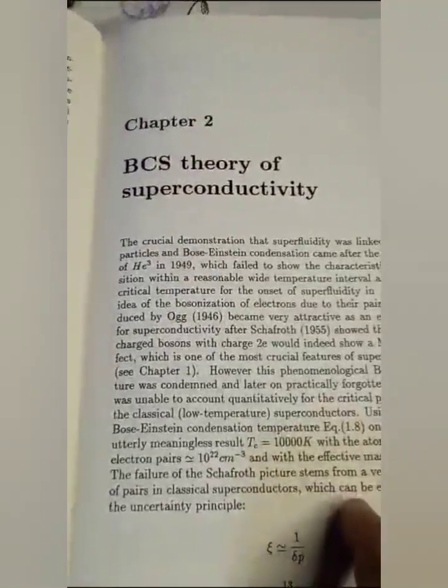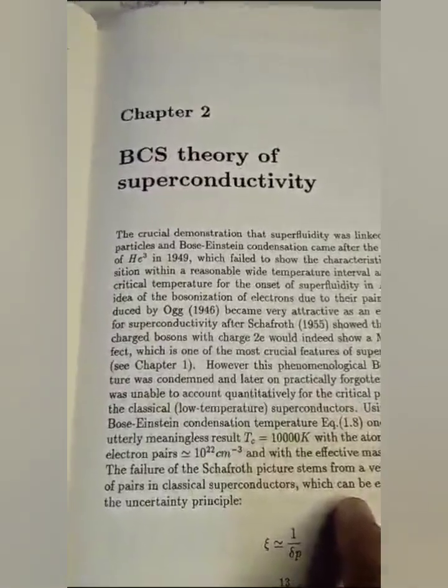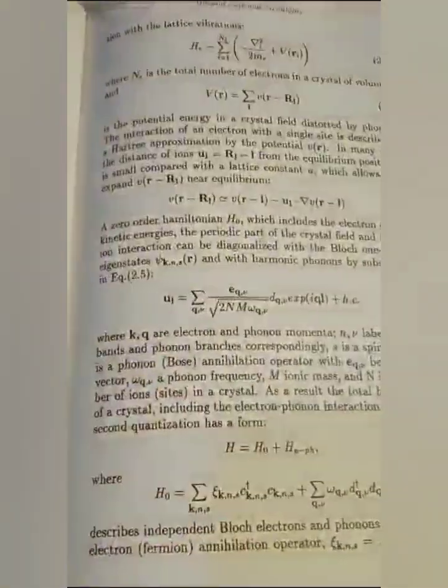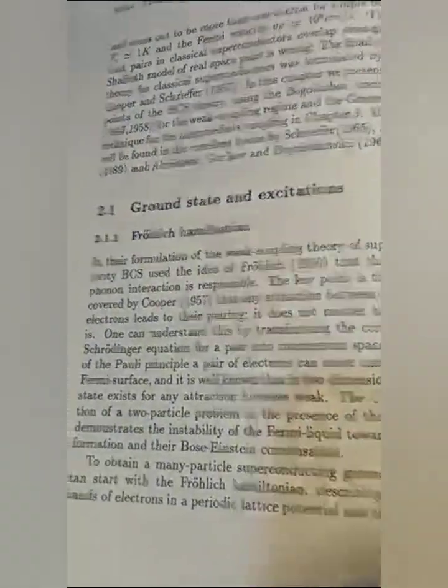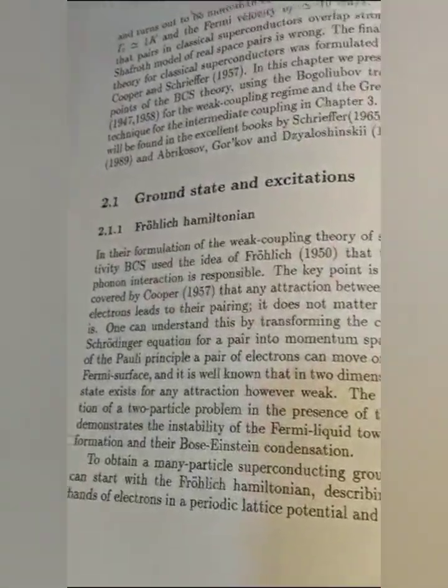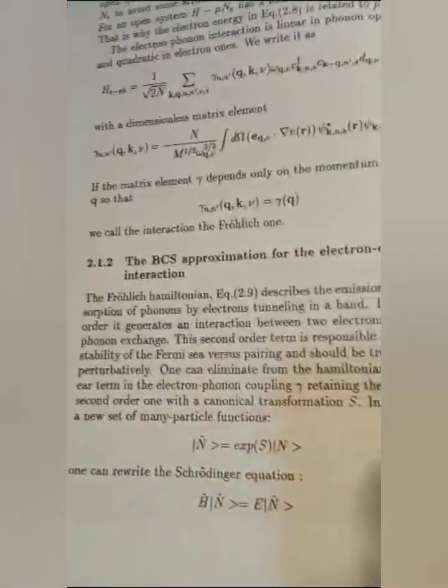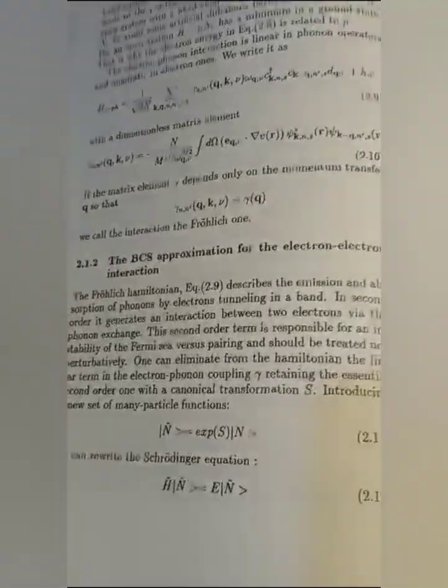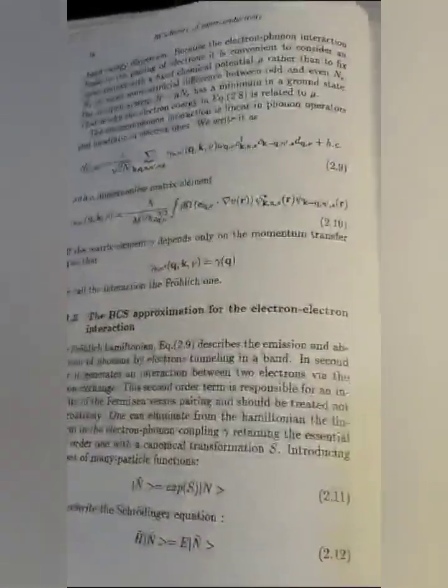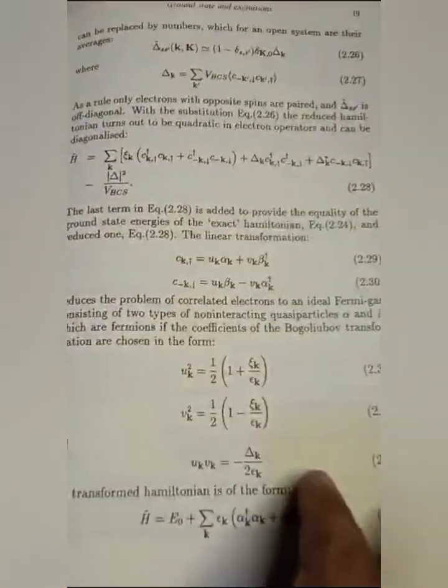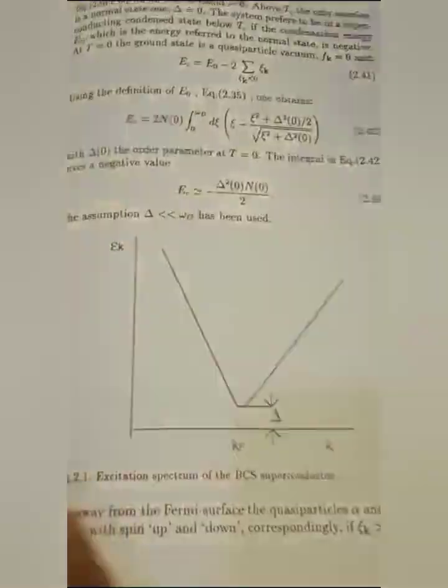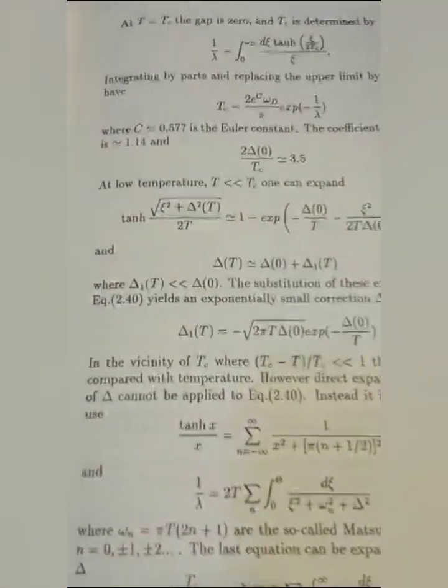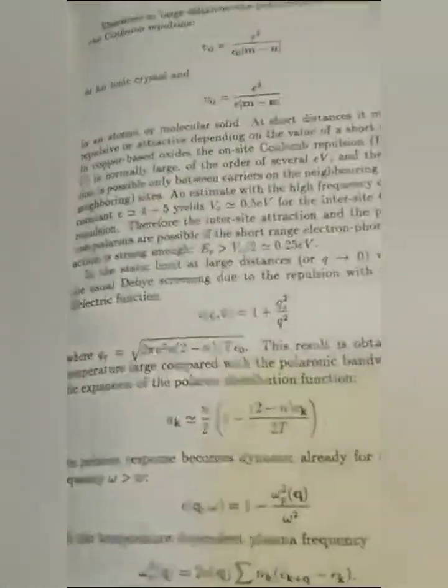This is the Bardeen-Cooper-Schrieffer superconductivity theory. Ground states and excitations, Fröhlich Hamiltonian, the Bardeen-Cooper-Schrieffer approximation for the electron-electron interaction. This is a very interesting monograph of physical condensed matter.